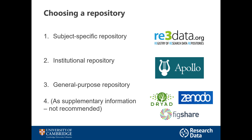However, in some disciplines there just isn't a typical repository. And if that's the case for you, then your second port of call is an institutional repository. If you're at Cambridge, we have Apollo, which is managed by us at Cambridge University Libraries, and it is effectively an extension of our library collection. So you will be required to put things like PhD theses and papers on Apollo, but you can also use it for your datasets, and our team is very happy to help with that.